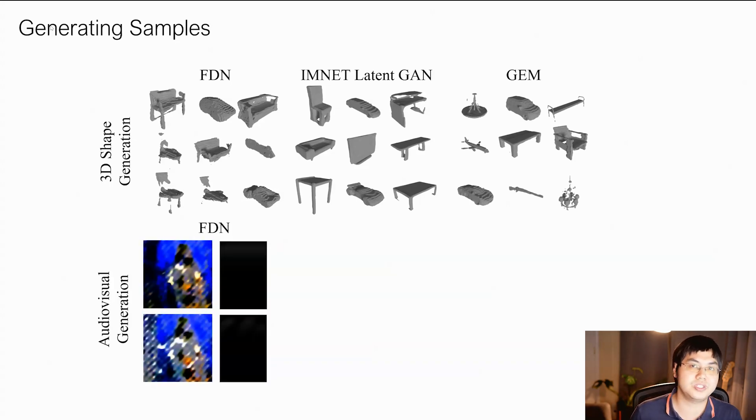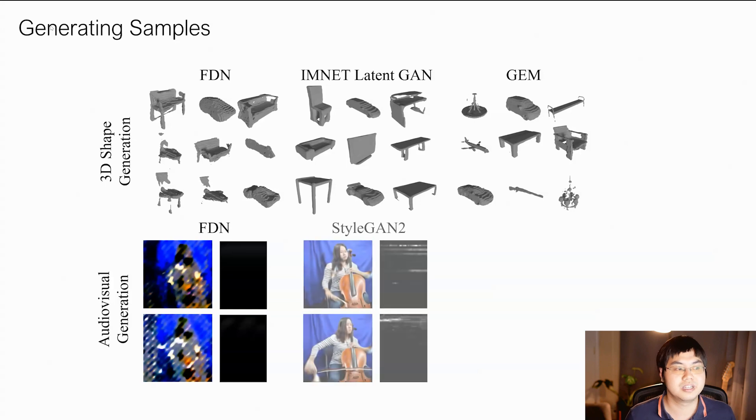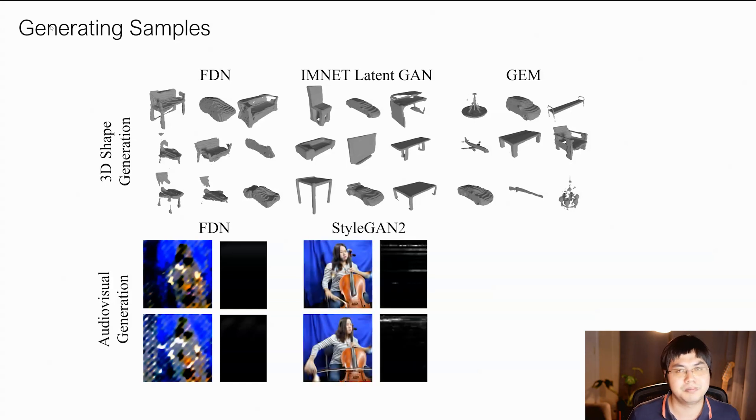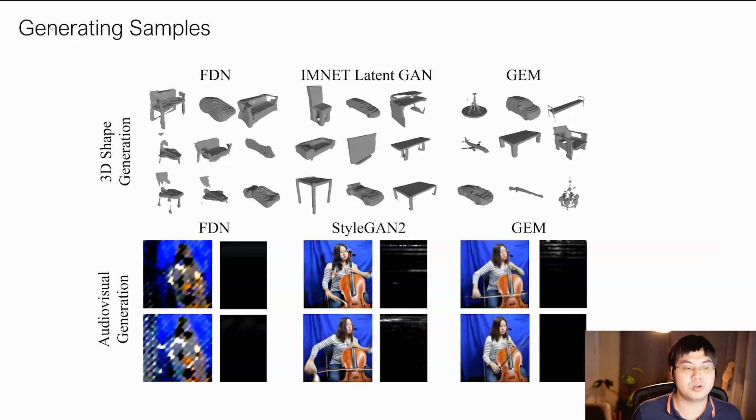We can also consider audio visual generations. Again, FDN gets somewhat poor visual generations, where the audio spectrogram is empty. StyleGAN2 is better, but the images still have noticeable artifacts and the sound is also somewhat speckled. In contrast, our approach has good images as well as good audio.